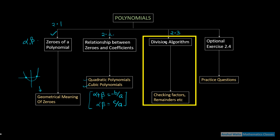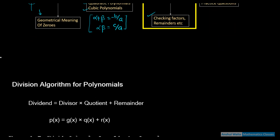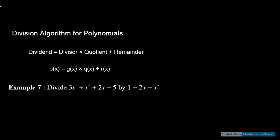अब third exercise, that is 2.3 — division algorithm। Division algorithm हम सब को आता है। इसमें हमने check करना है — checking factors, remainders — यह सारी चीज़ें division में आती हैं। Polynomials के case में बस हमने apply करना है। तो बिना किसी time को waste करते, let us start।